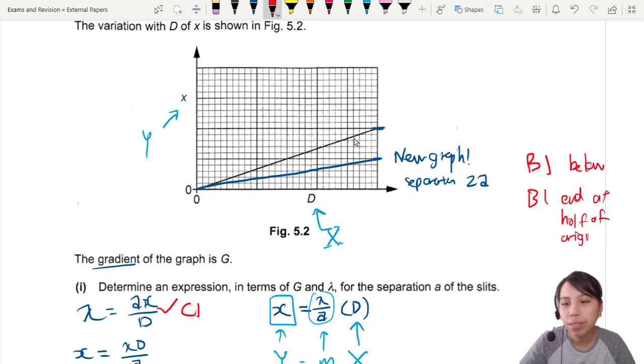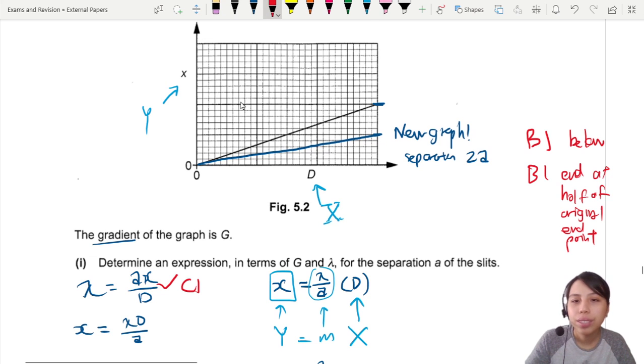The second mark is if you end at half of the original endpoint. So this one half, you drop by half. Two marks. I think that's all for this question.